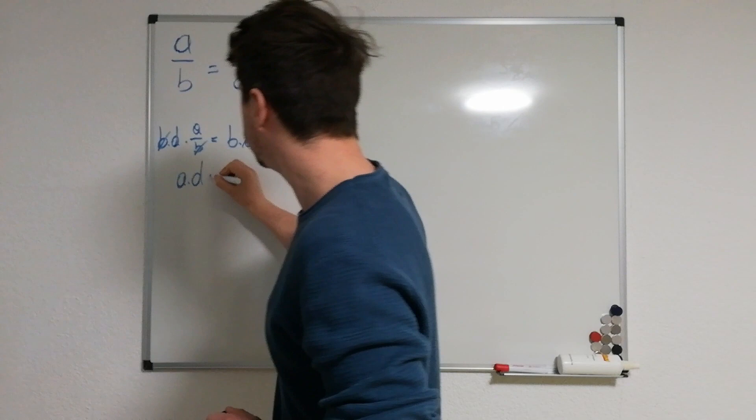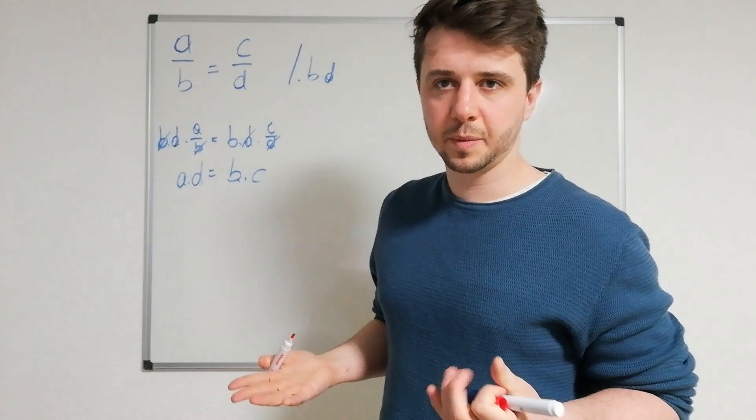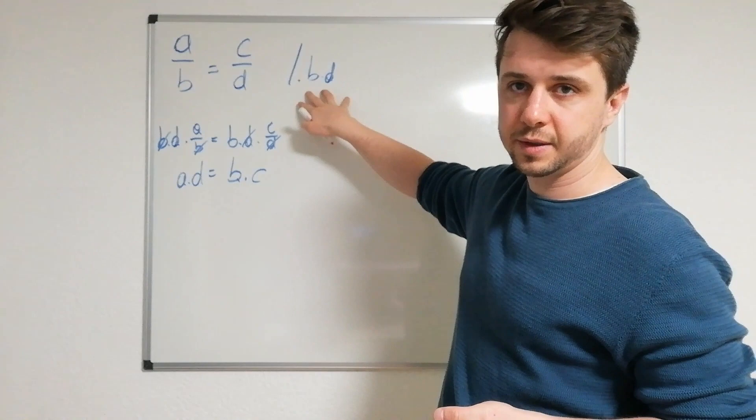So the crosswise multiplication works the following way: instead of multiplying times the smallest common denominator, you just go ahead and multiply those two equals multiplying those two.